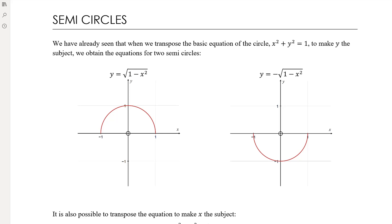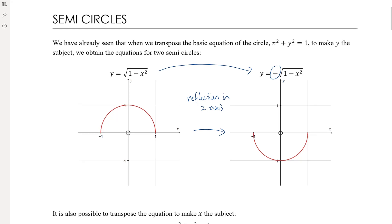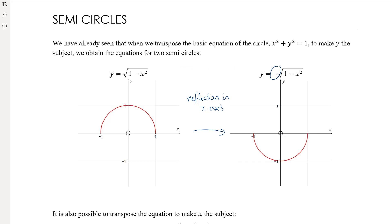The only difference between the two equations is the negative out the front, which is a reflection in the x-axis. Sticking a negative in front of a function reflects it in the x-axis. We can think of it as: where y equals positive values we're above the x-axis (top half), and where y equals negative values we're looking at the bottom half of the semicircle.